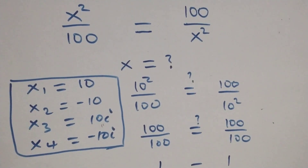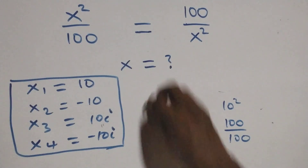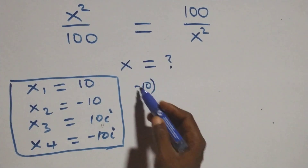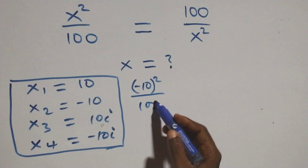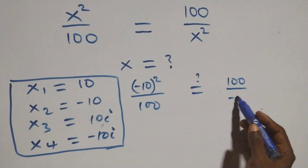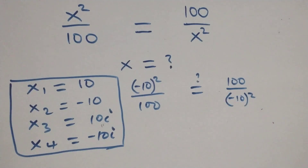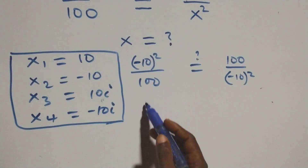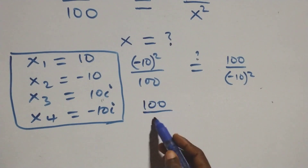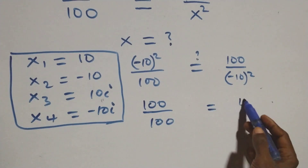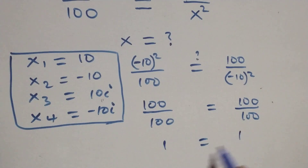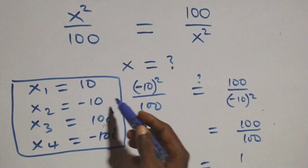Also substituting x equals minus 10: we get minus 10 squared over 100, which equals 100 over minus 10 squared. The minus when squared becomes positive, so 10 squared is 100 over 100. This equals 100 over 100 as well, giving 1 equals 1. Left-hand side equals right-hand side, so minus 10 also satisfies the given problem.